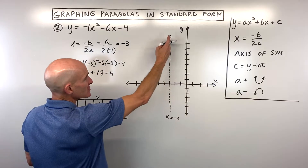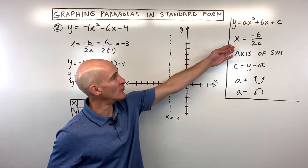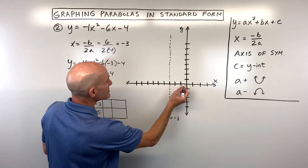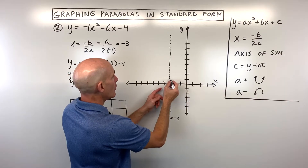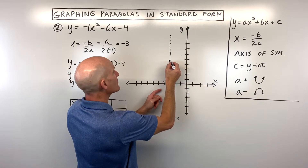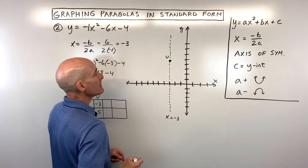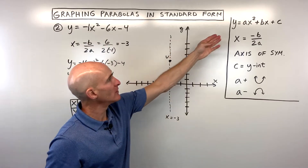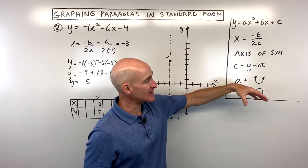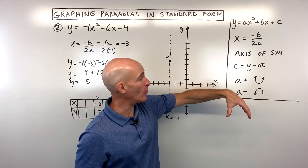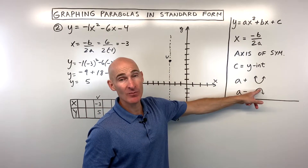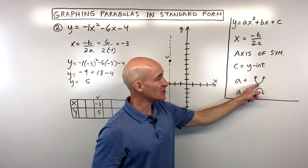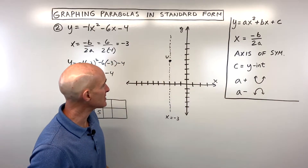The vertex is always on the line of symmetry — that's why negative b over 2a corresponds to the x-coordinate of the vertex. Plotting the vertex at (negative 3, 5). Notice that the a value is negative in this example. When the a value is negative, the parabola opens down, giving us a maximum or high point. When the a value is positive, it opens up and gives a minimum or low point. That's important to remember.